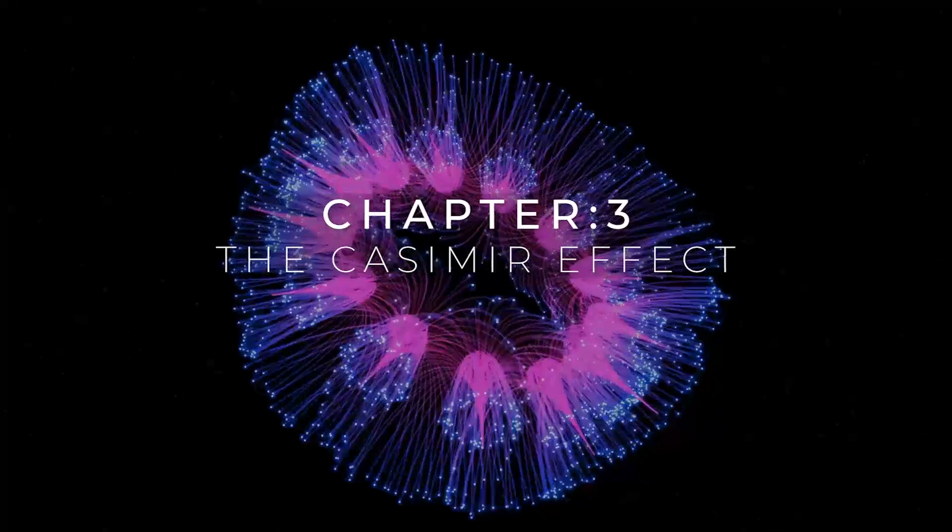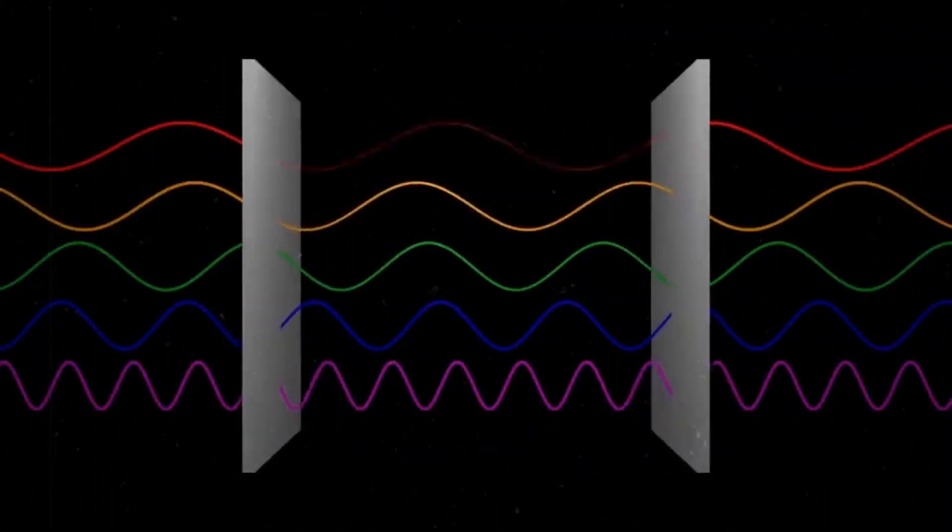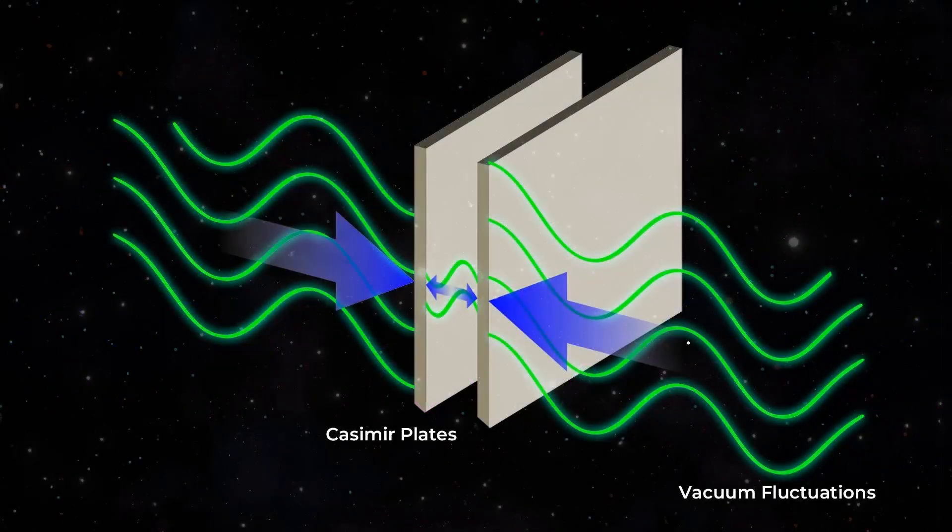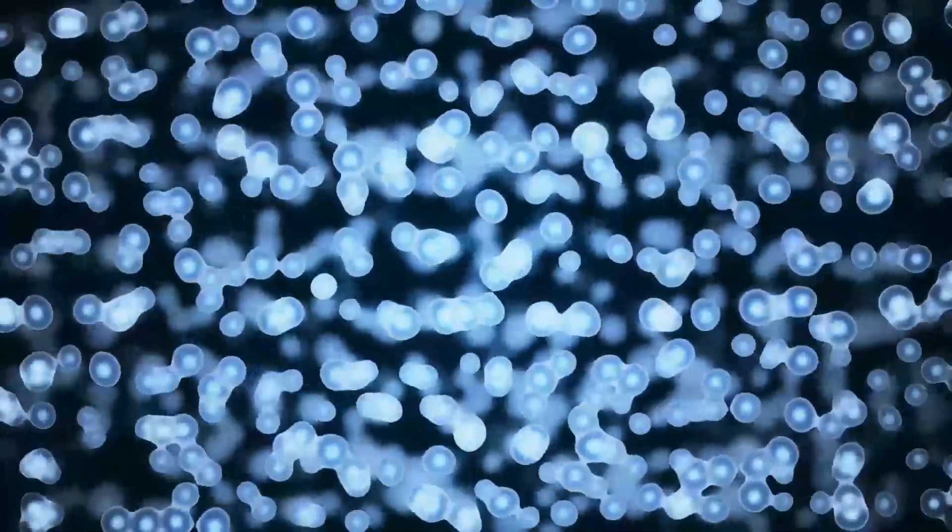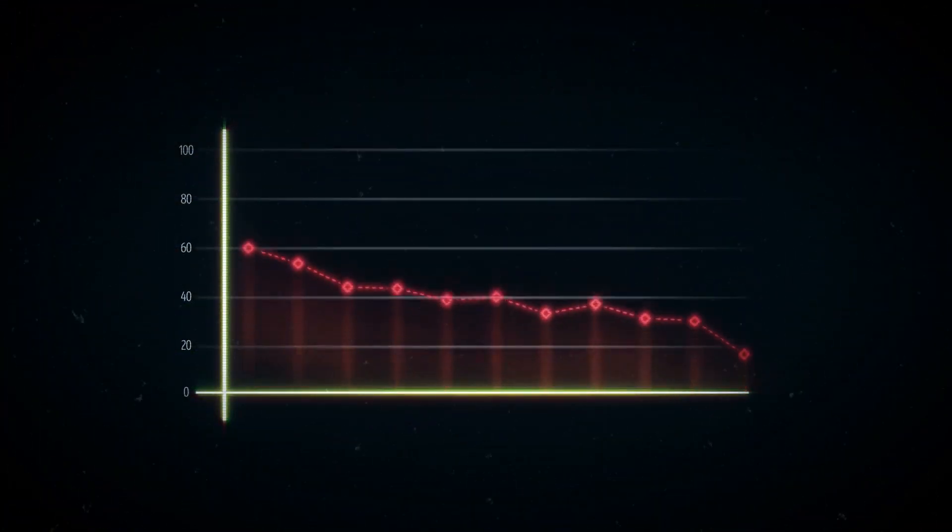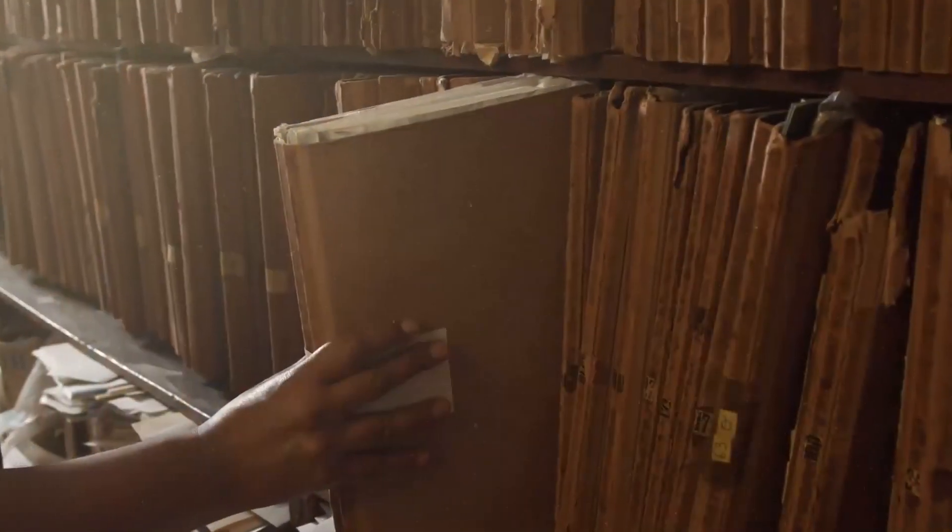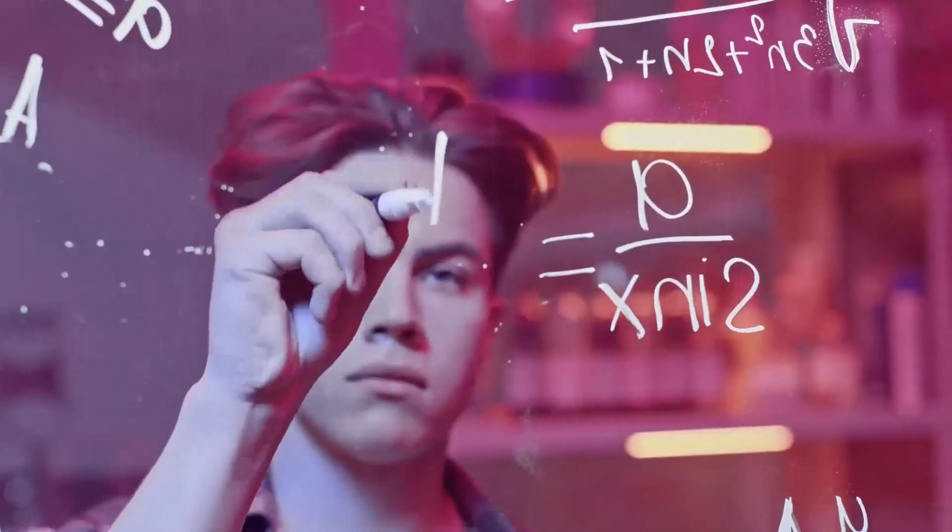Chapter 3. The Casimir effect. A glimpse into ZPE. The Casimir effect is one of the most fascinating real-world demonstrations of ZPE. Imagine placing two plates super close together in a vacuum, just nanometers apart. At that distance, something strange happens. The quantum fluctuations between the plates are restricted, creating a measurable pressure difference. Think of it like closing the gap between two books on a shelf so tightly that there's less room for dust particles. This reduction in vacuum energy between the plates causes them to pull together as if the universe is gently nudging them. It is real, it's measurable, and it's a beautiful demonstration of zero point in action.